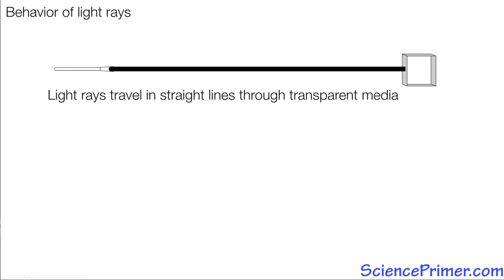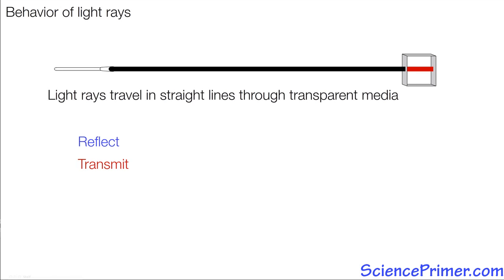When a light ray encounters a surface, one or more of the following three things occur: the light ray either reflects off the surface and travels off in a different direction, passes from one medium into the other and continues on a new straight line path, or is absorbed. Often, more than one of these occur, and the behavior that dominates depends upon the type of interface and the angle at which the light ray falls on the surface.